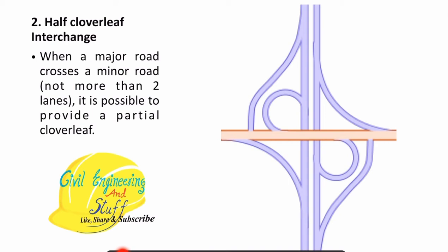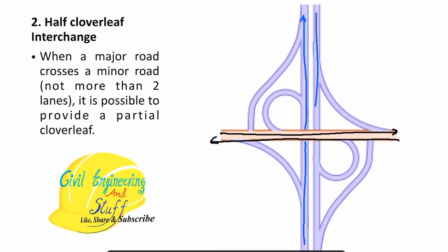In the half-cloverleaf, a major road can cross a minor road, and the loop sections provide ease of movement of traffic. Traffic at higher elevation can use the facility to move to lower elevation, and traffic from lower elevation can use the interchange and move in a different direction. The movement of traffic through each part of the interchange can be arranged depending on the traffic requirements.